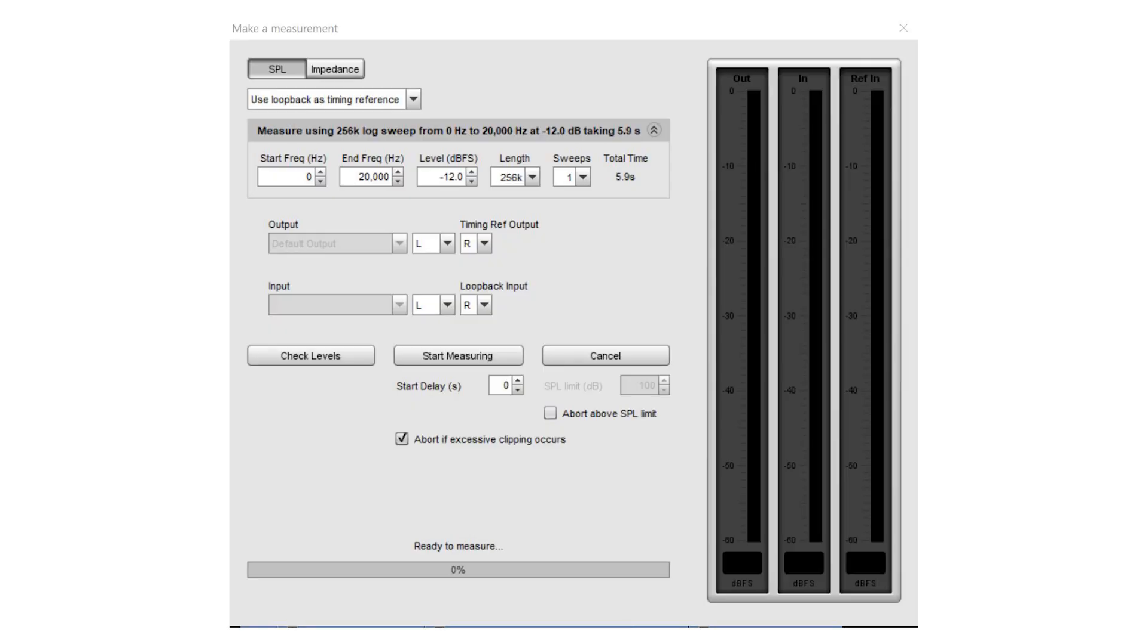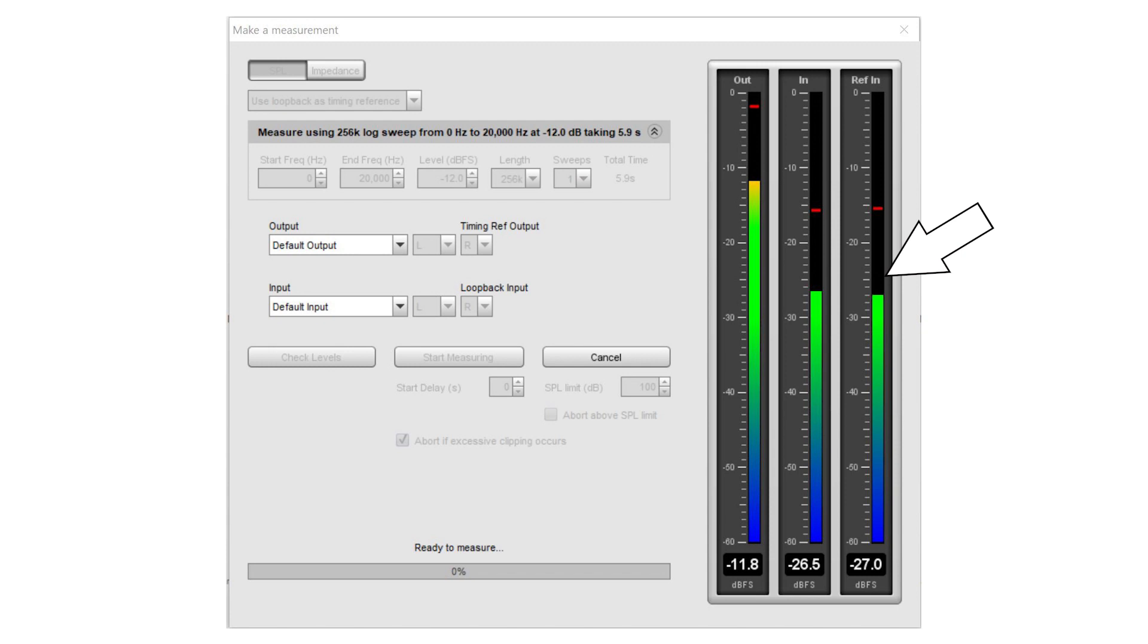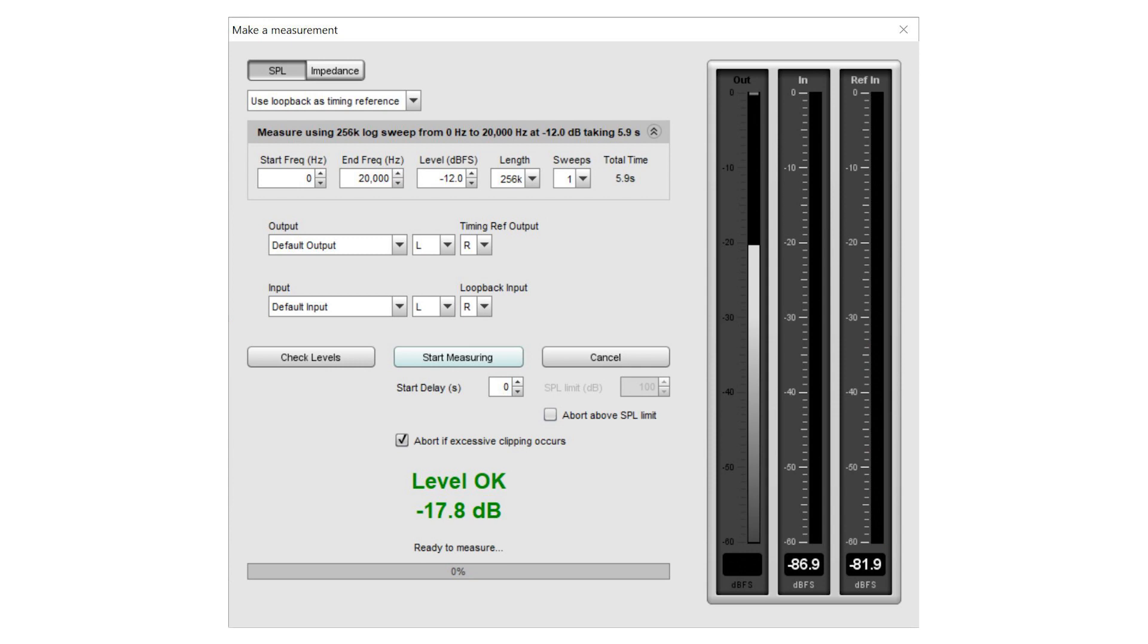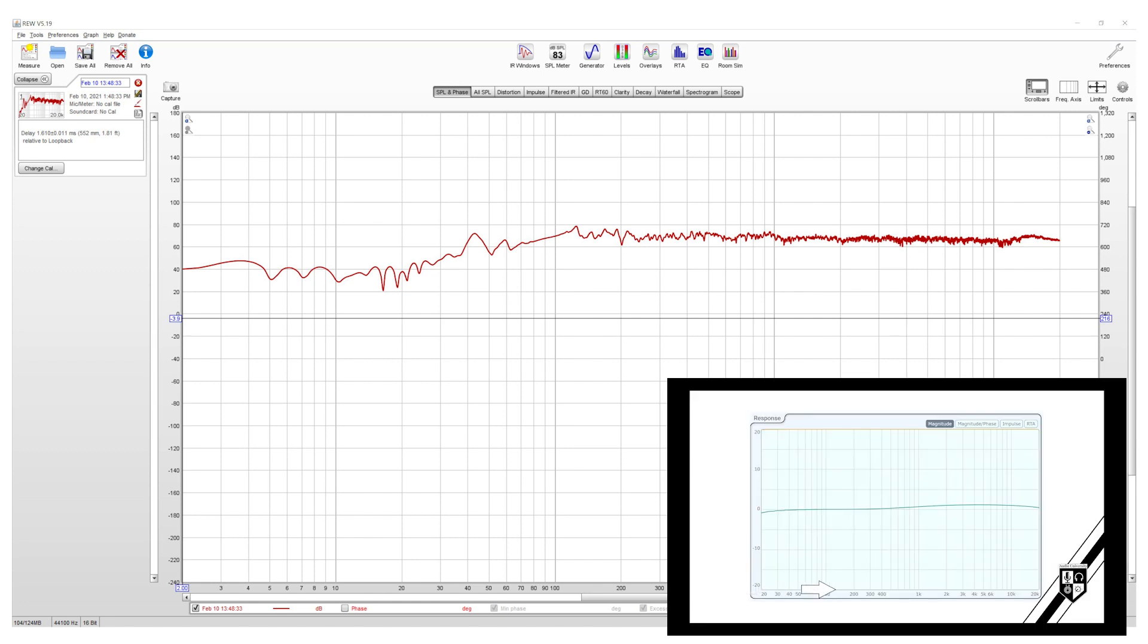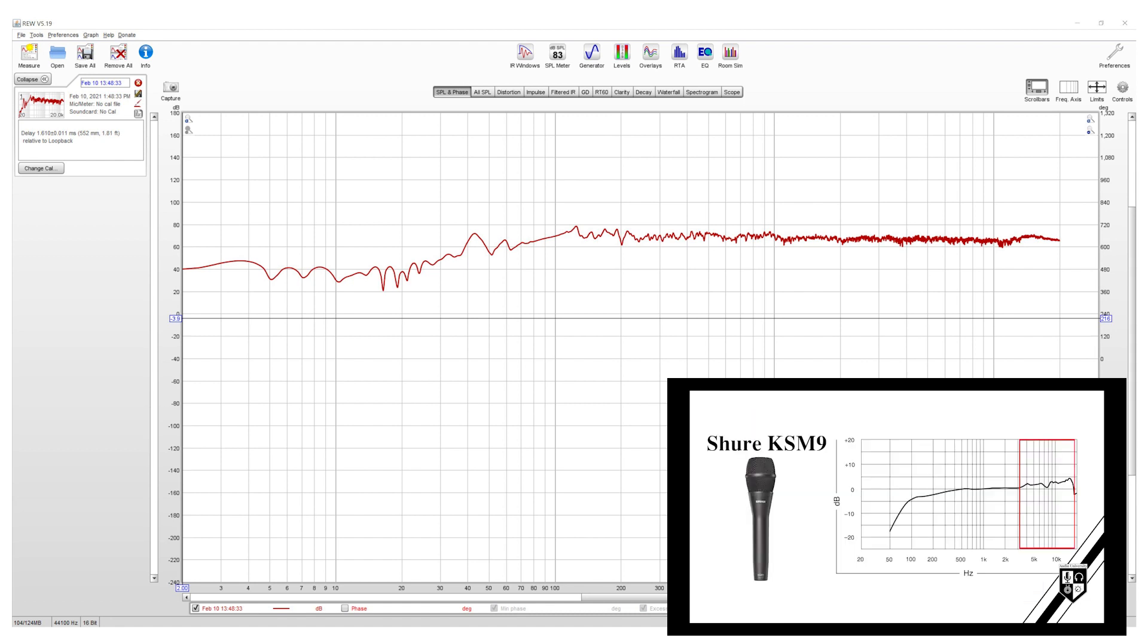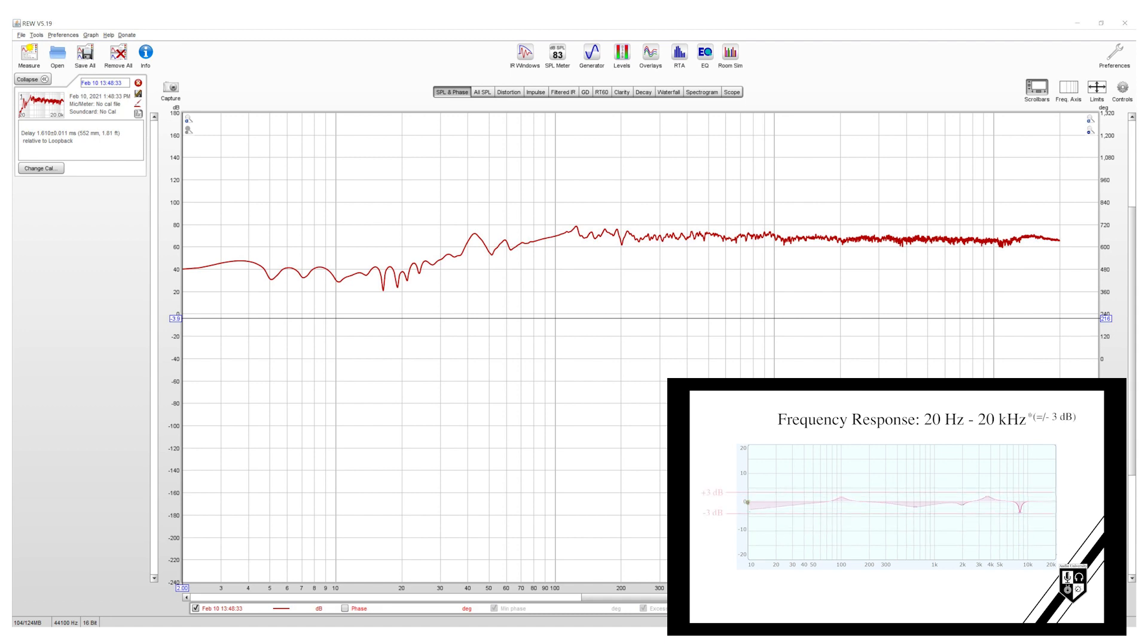Before testing, it's important to check levels. The test signal will play out of the two outputs we've selected. The goal is to adjust the gain until the test input signal and the reference input signal are the same level. Once you've got the levels dialed in, click Start Measuring. After the test signal plays, you'll see the results of the test. This graph should look familiar if you've watched my videos on frequency response graphs. To learn how to interpret this graph, click the link in the top right corner of your screen.